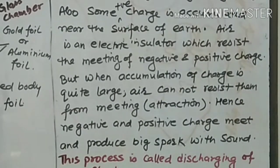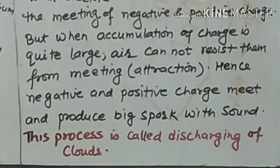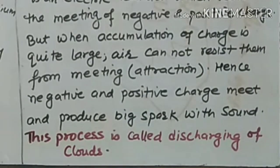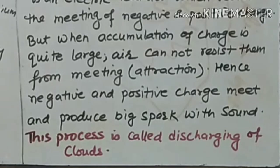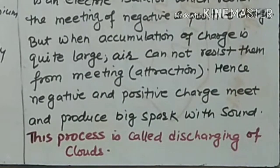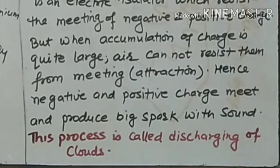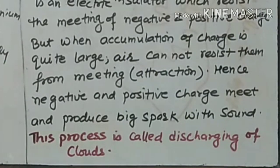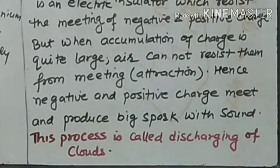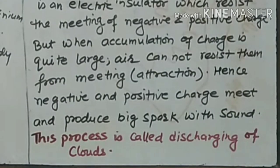air is no longer able to resist them from meeting. The attraction of charges is so strong that air cannot stop it. Hence the charges meet, producing a big spark as well as a loud sound. This loud sound is called thunder, the big spark is called lightning, and the whole process is called discharging of clouds.